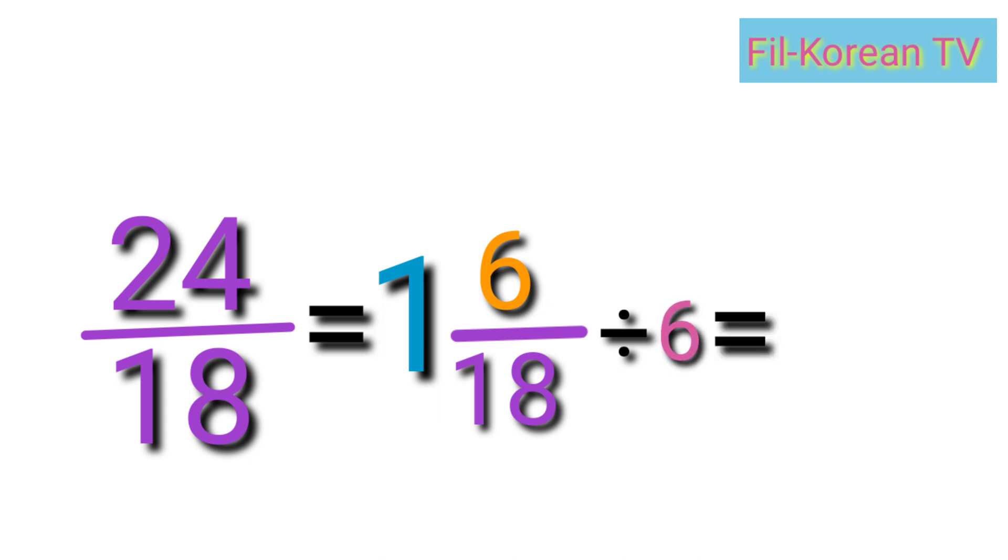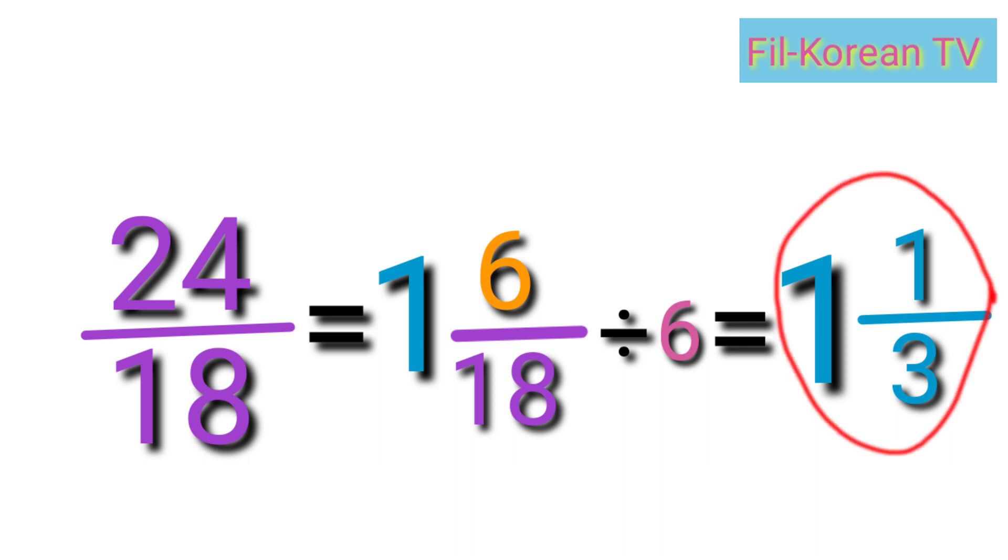Now, let's answer. Write the whole number one. Then, divide. Six divided by six equals one. Eighteen divided by six equals three. The answer is one and one-third.